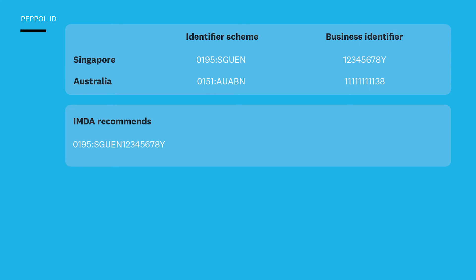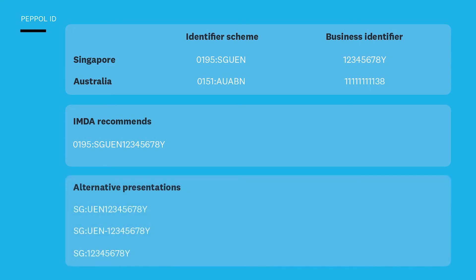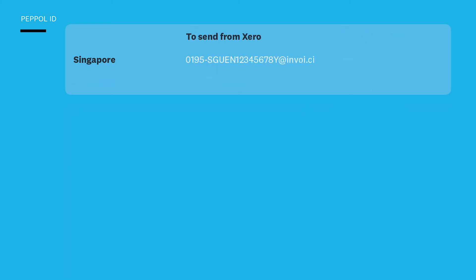This is the format that the IMDA recommends: the country identifier 0195, followed by a colon, then SGUEN, and the UEN number. Sometimes you might see other ways of presenting that PEPL ID — here are just some examples. So if you do find out your customer's PEPL ID, it might be presented slightly differently. But to send it in Xero, you need the country identifier 0195 for Singapore, use a dash, and then SGUEN followed by that UEN number. That will allow Storkove to send that invoice via the e-invoicing network.